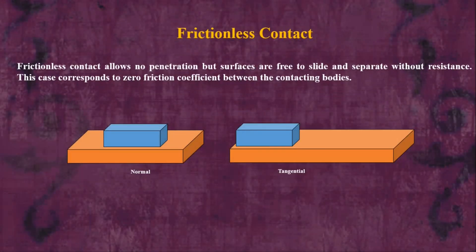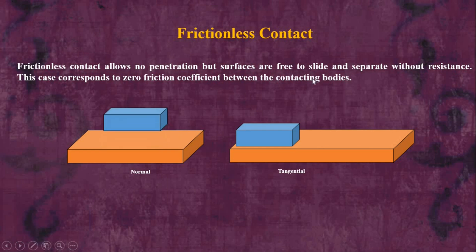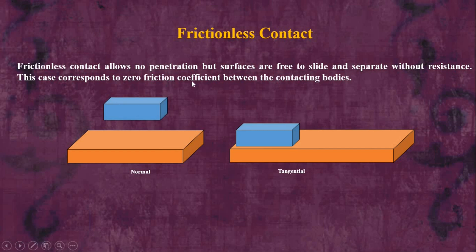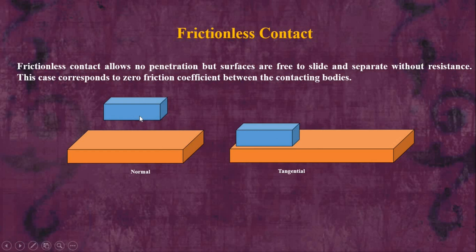Frictionless contact is another type of non-linear contact. It allows no penetration, but surfaces are free to slide and free to separate without any resistance. This case corresponds to a zero coefficient of friction between the contacting surfaces, meaning mu equals zero.